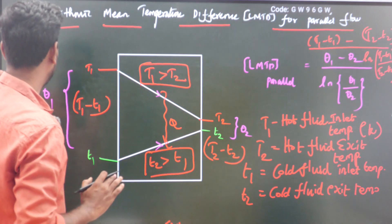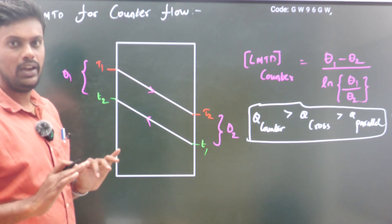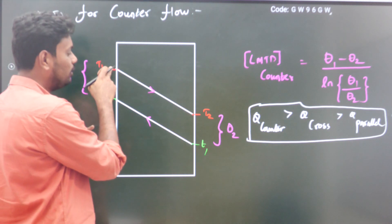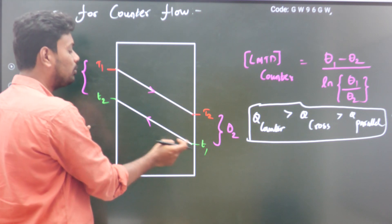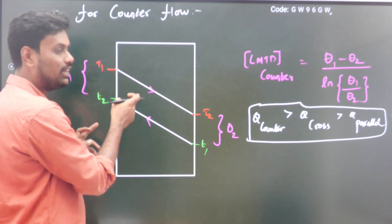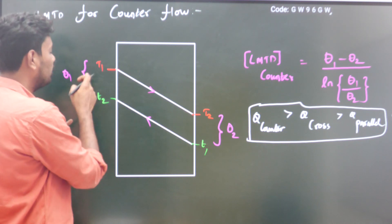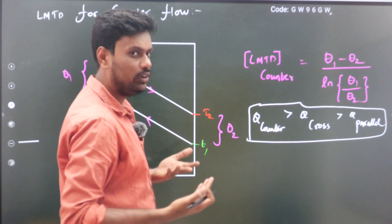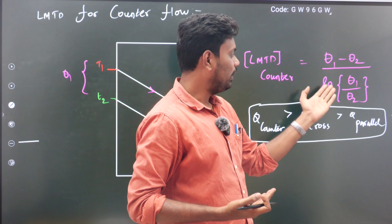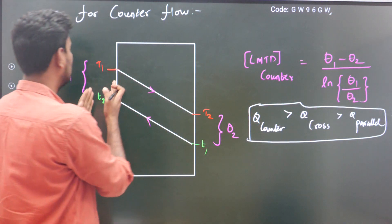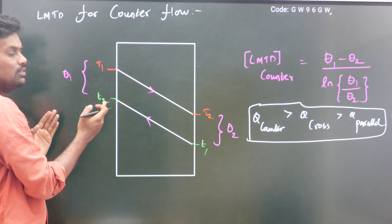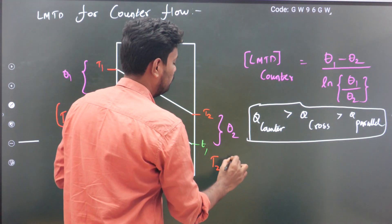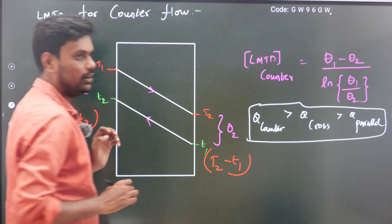For counter flow, it is just opposite to parallel flow. The hot fluid enters from left to right and cold fluid moves from right to left because the direction is reversed. The same concept applies — theta 1 minus theta 2 by ln of theta 1 by theta 2. Here theta 1 is T1 minus T2 and theta 2 is T2 minus T1.